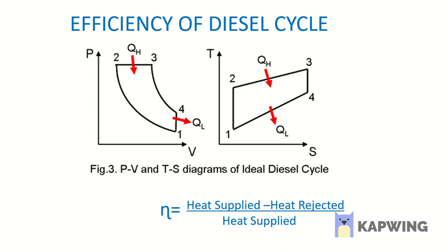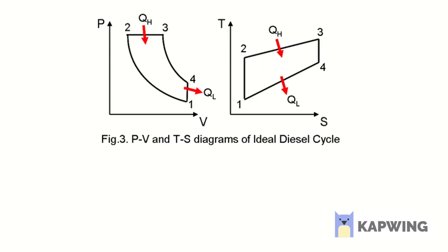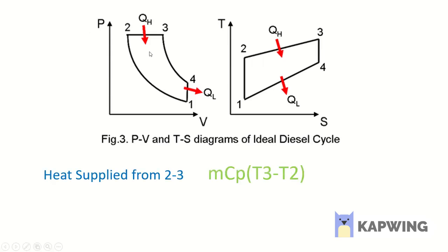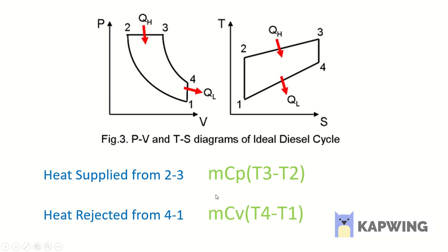From the graph, heat is supplied from 2 to 3, which is the constant pressure heat addition process. So heat supplied is given by M·Cp·(T3 minus T2). Heat rejection takes place at process 4 to 1, the constant volume heat rejection process, given by M·Cv·(T4 minus T1).